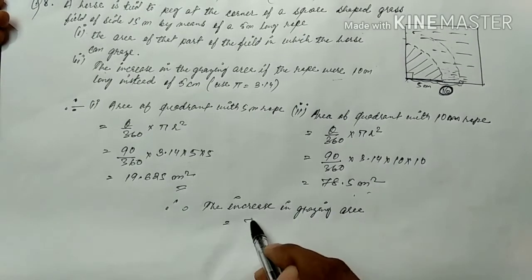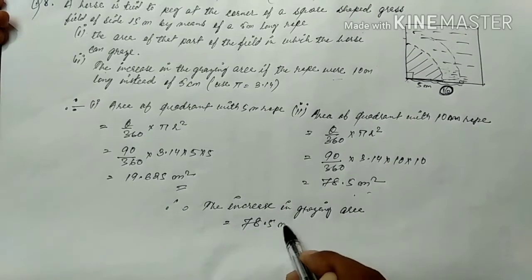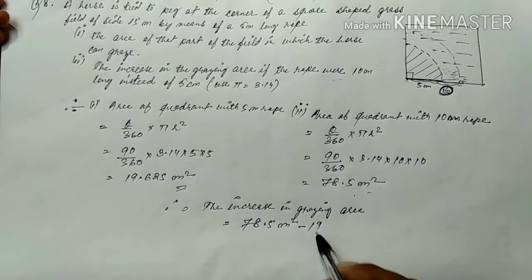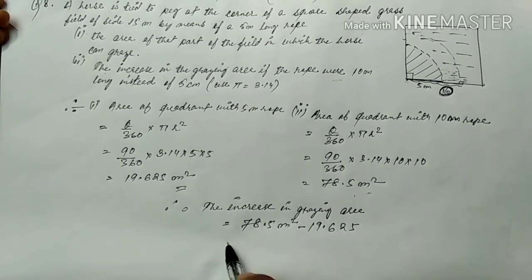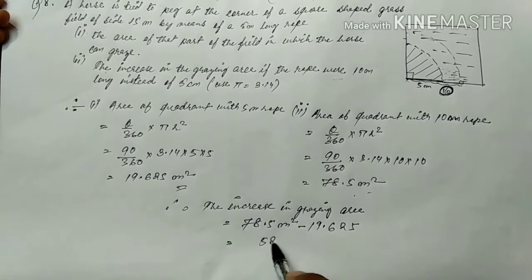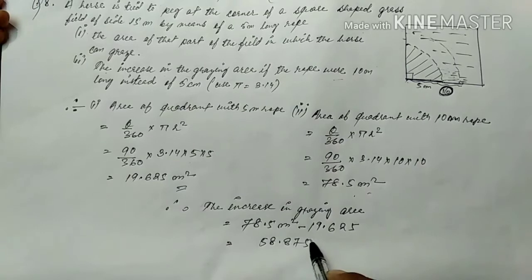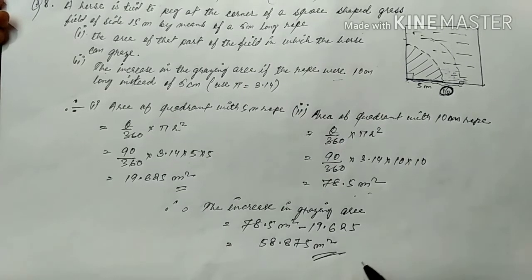equals to 78.5 m squared minus 19.625, equals to 58.875 m squared. This is the answer.